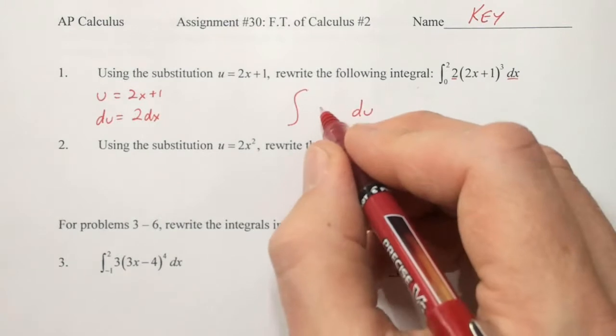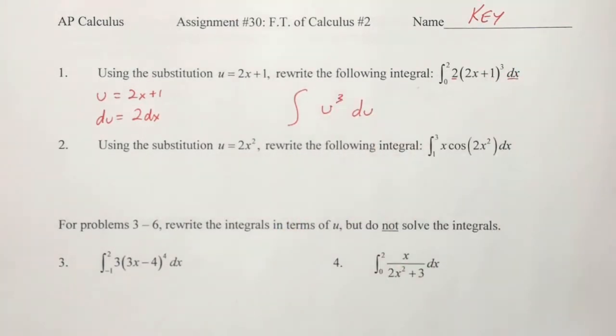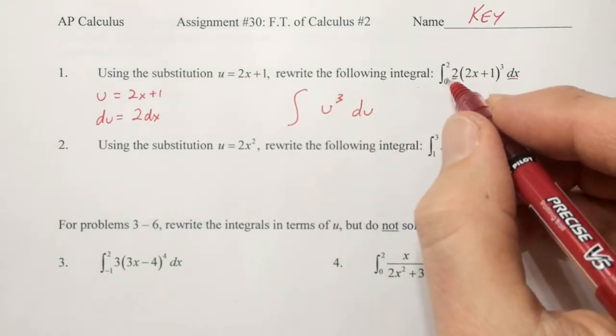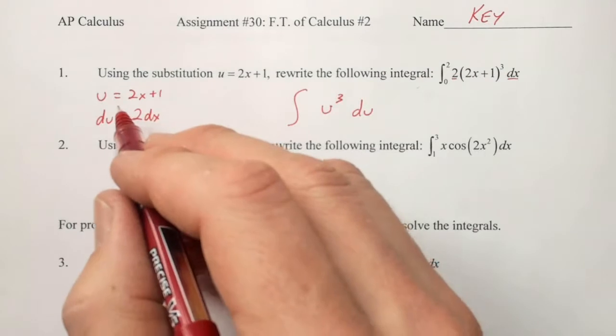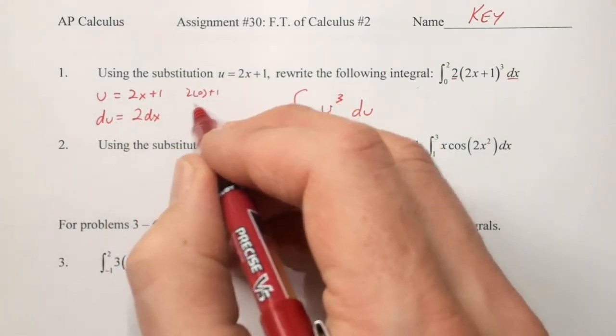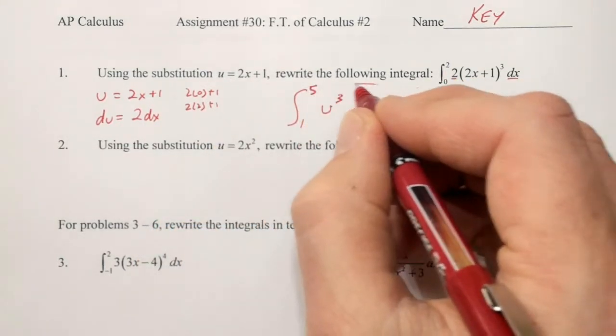2x plus 1 is replaced by u. 2x plus 1 was being cubed, so u must also be cubed. We finally need to change the bounds. We plug the 0 and the 2 into our equation: 2 times 0 plus 1, 2 times 2 plus 1. Our new bounds are 1 and 5.